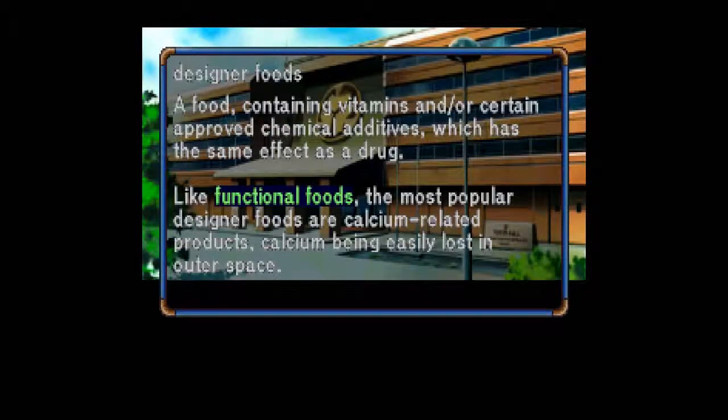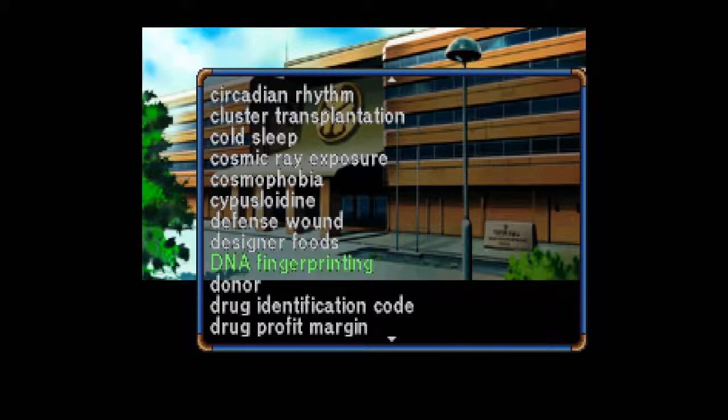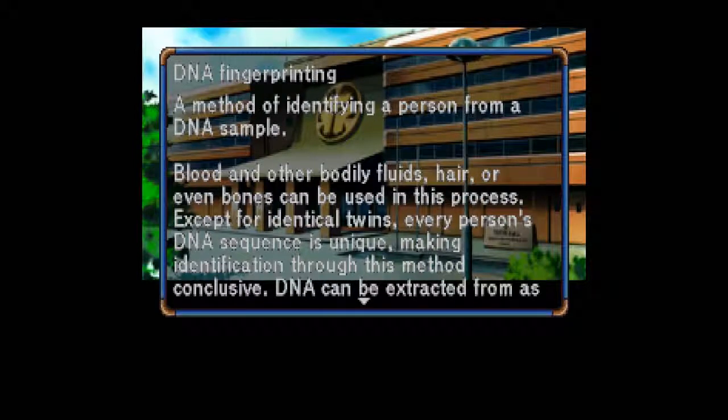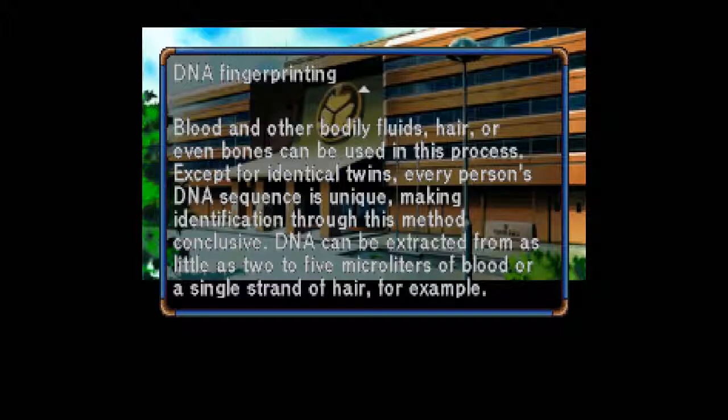Designer Foods: A food containing vitamins and/or certain approved chemical additives which has the same effect as a drug. Like functional foods, the most popular designer foods are calcium-related products, calcium being easily lost in outer space. DNA Fingerprinting: A method of identifying a person from a DNA sample. Blood and other bodily fluids, hair, or even bones can be used in this process. Except for identical twins, every person's DNA sequence is unique, making identification through this method conclusive. DNA can be extracted from as little as 2 to 5 microliters of blood or a single strand of hair.